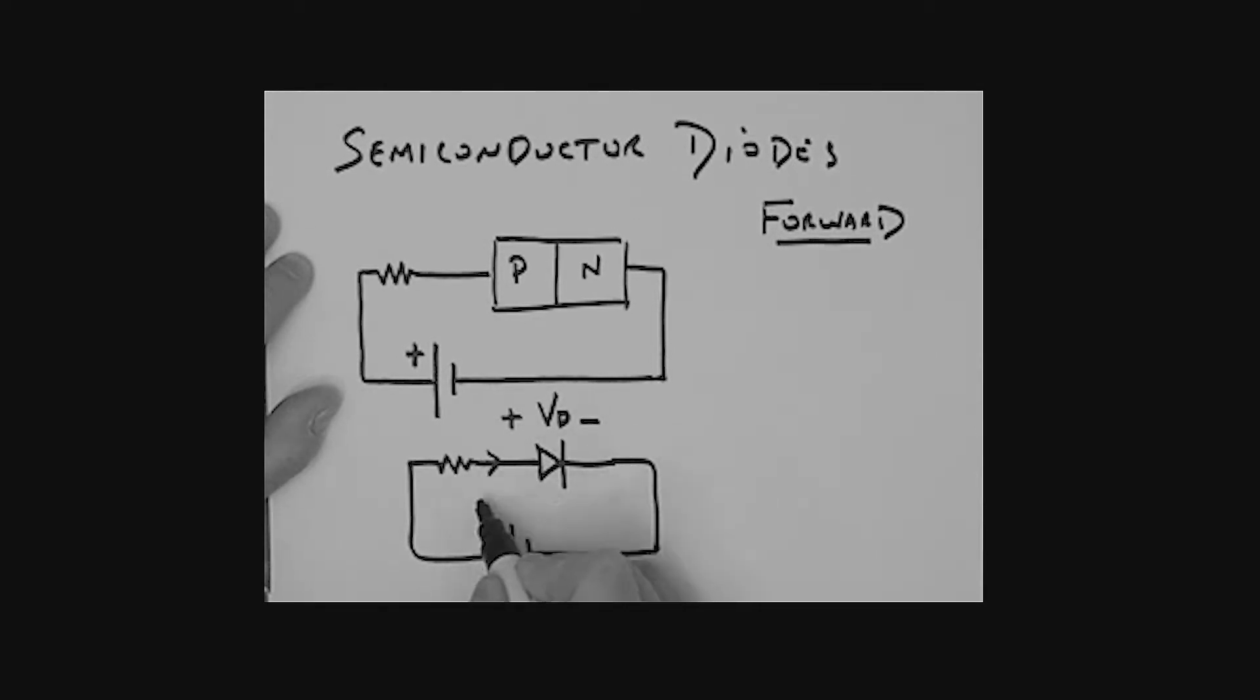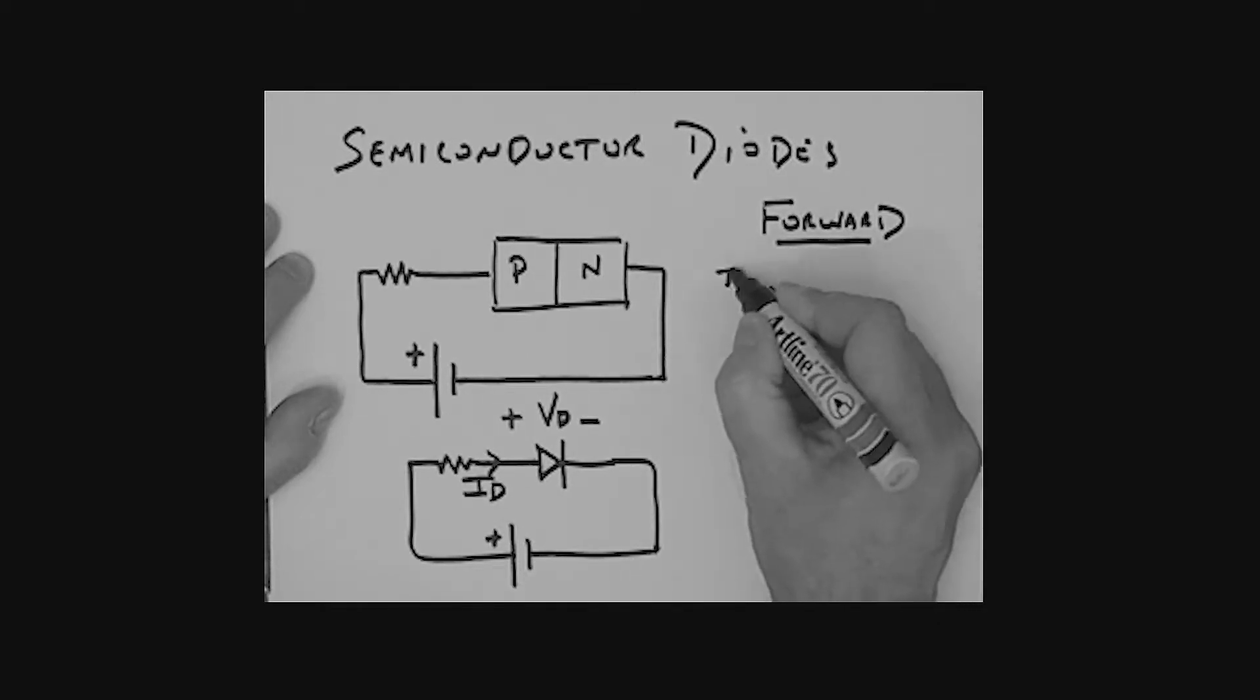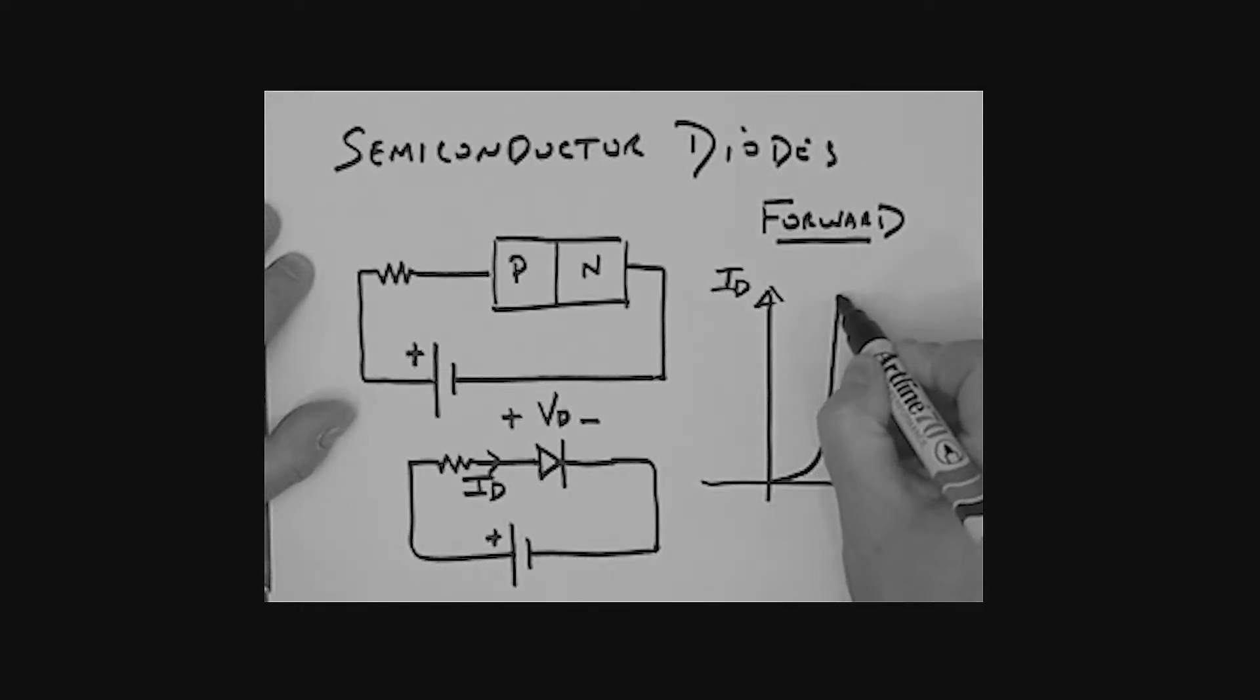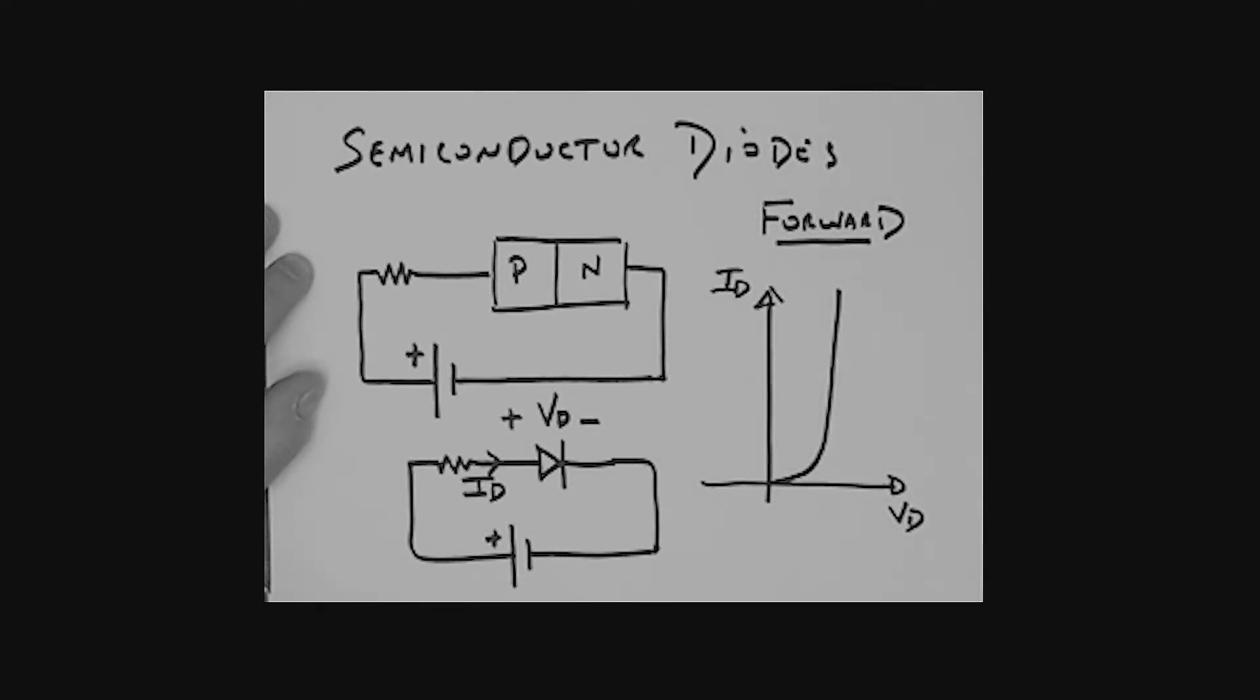If we look at the characteristic of the diode when it is being operated in the forward biased direction, basically the relationship between the voltage across that diode, VD, and the current through the diode, ID, is an exponential relationship. If we roughly drew a graph, we have the current ID and the voltage VD across the diode, then we're effectively seeing an exponential curve like so.